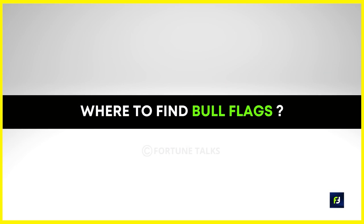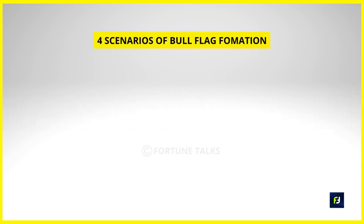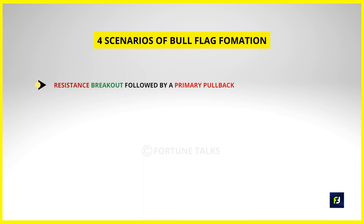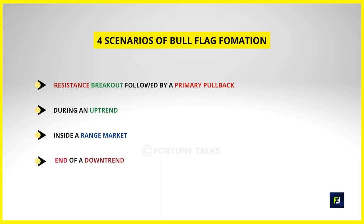There are four scenarios to trade bull flags with satisfactory risk-to-reward: first, the formation of a bull flag during a level breakout followed by a primary pullback; second, when a flag forms during an uptrending market signaling trend continuation; third, when bull flags occur inside a range market; and fourth, when a bull flag occurs in a downtrend signaling a potential trend reversal. The entry, target, and stop loss criteria are the same for all these cases.